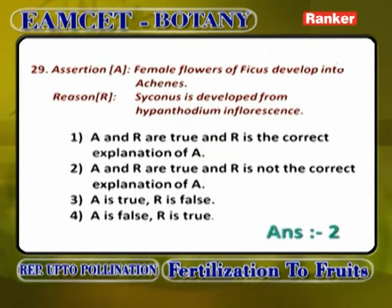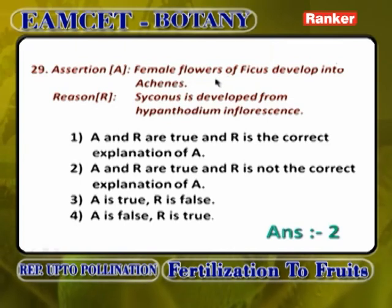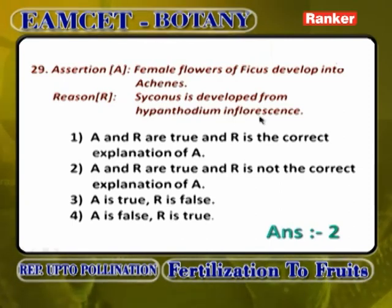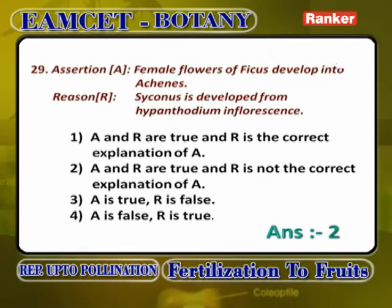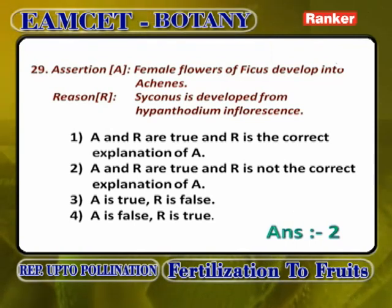Assertion: fertile female flowers of Ficus develop into achenes. Syconus is developed from hypanthodium inflorescence. Both A and R are correct. However, because syconus develops from hypanthodium inflorescence, female flowers producing achenes is not explained by this reason. Answer: A and R are correct, but R is not the correct explanation of A.